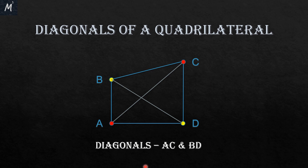So the diagonals of a quadrilateral are AC and BD. We can conclude that there are only two diagonals in a quadrilateral.